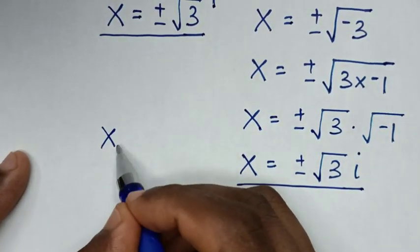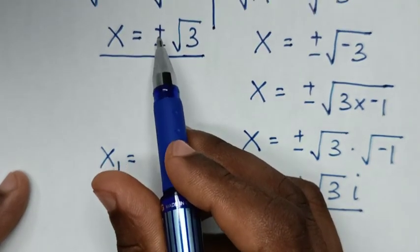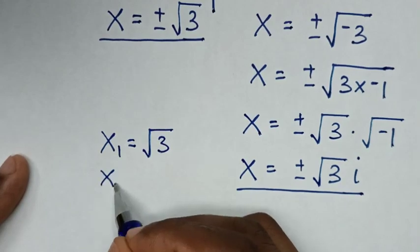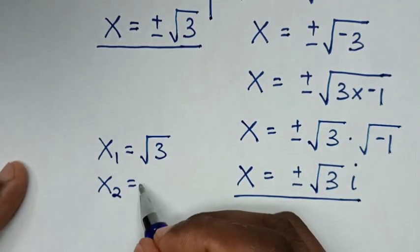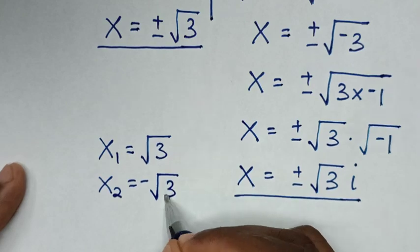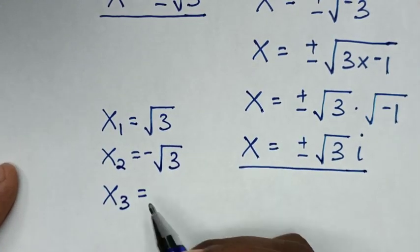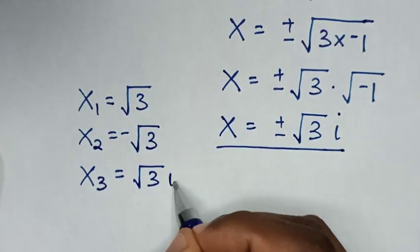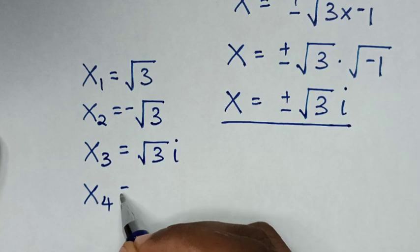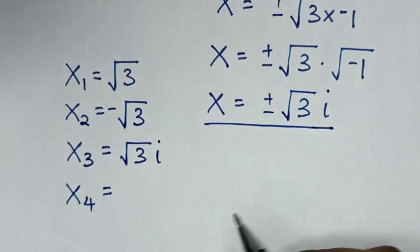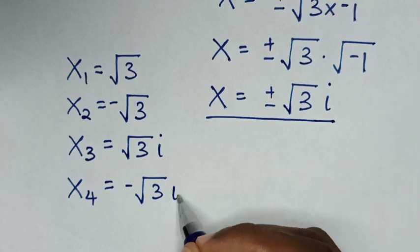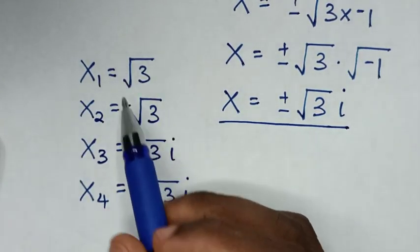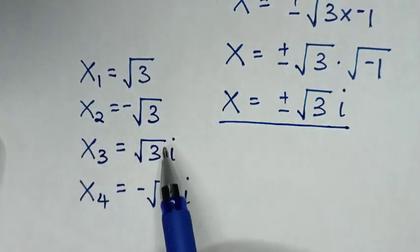Therefore the four values of x are: the first value is positive square root of 3, the second value is negative square root of 3, the third value is positive square root of 3 times i, and the fourth value is negative square root of 3 times i. These first two are real solutions and the last two are complex solutions.